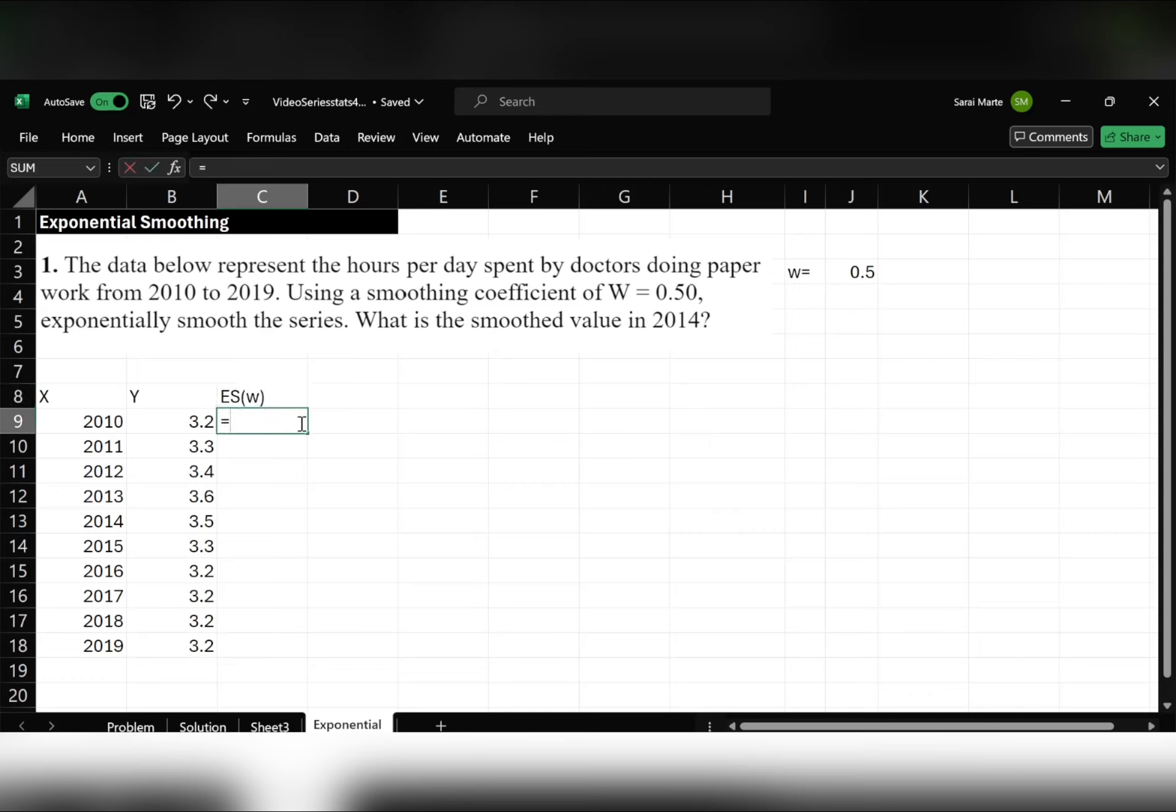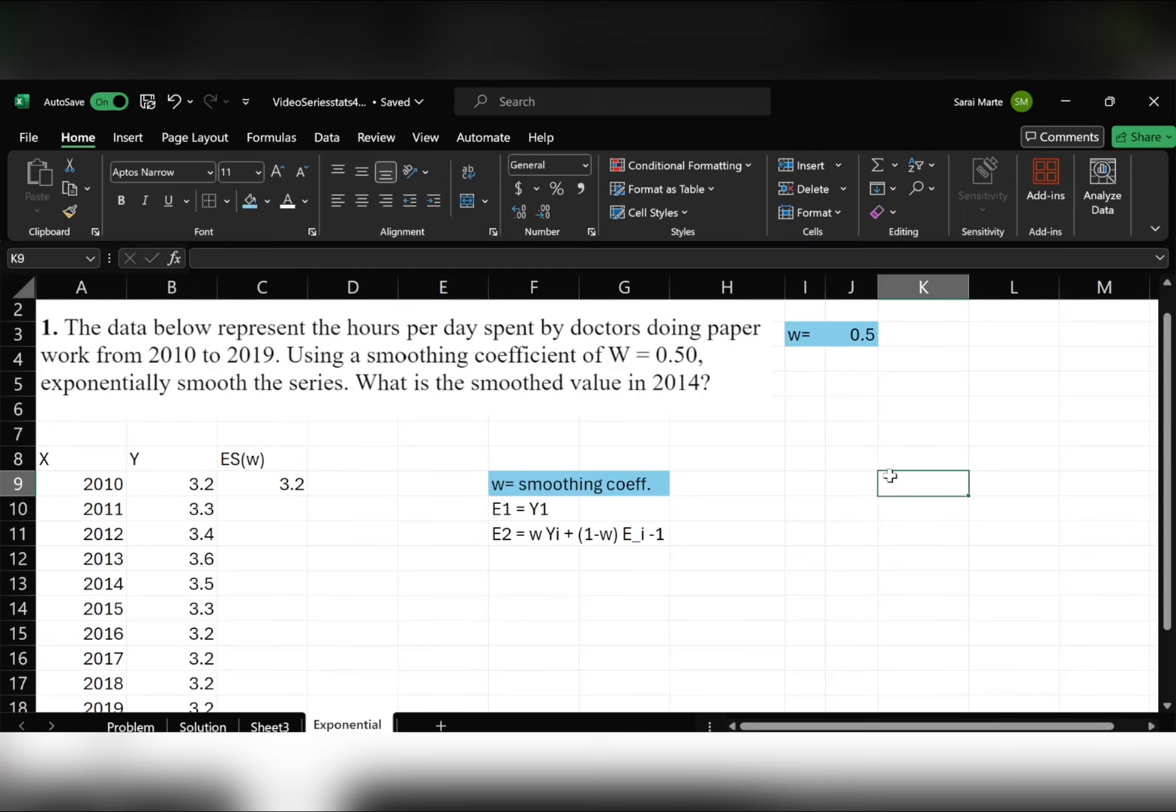The first one is always going to be the first Y value. So W is our smoothing coefficient. Our first E1 value is going to be equal to our first Y1 value. And then E2 is going to be equal to W, which is 0.5,